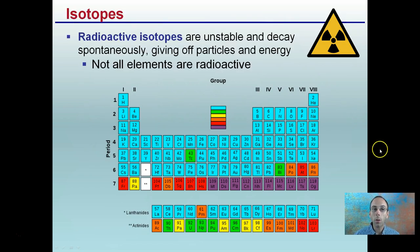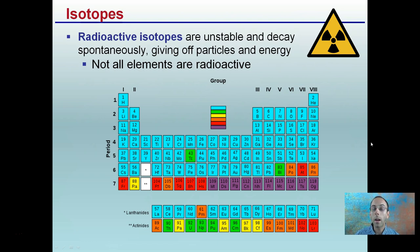Now isotopes — there are also radioactive isotopes, and radioactive isotopes are kind of dangerous. They're unstable and decay spontaneously, and they give off particles and energy. Not all elements are radioactive. Some are definitely a lot more likely to be radioactive, but not all elements necessarily have radioactive isotopes that occur in nature.